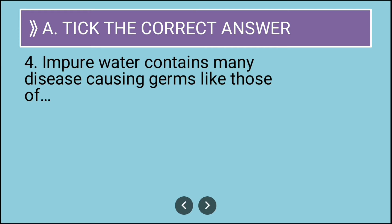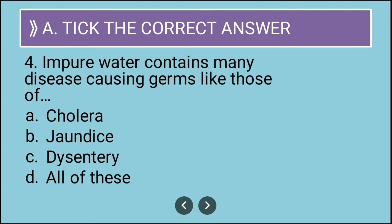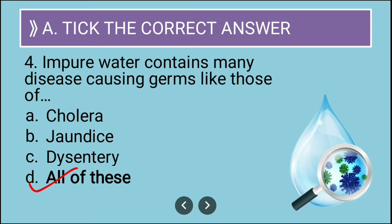The next question is: impure water contains many disease-causing germs like those of cholera, jaundice, dysentery - what is the correct answer? The answer is all of these, because all these diseases and the germs that cause them are present in impure water. So cholera, jaundice, dysentery - all of these can be present in impure water.